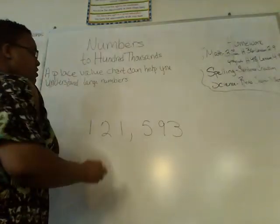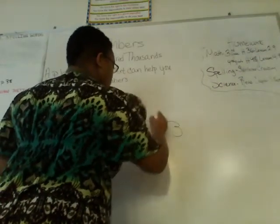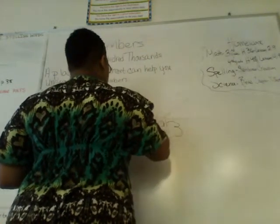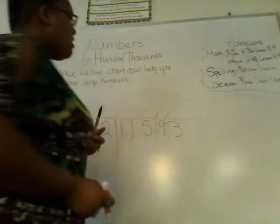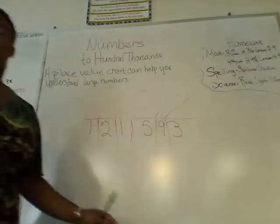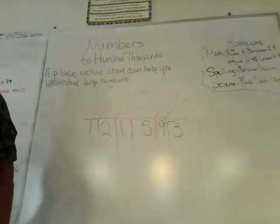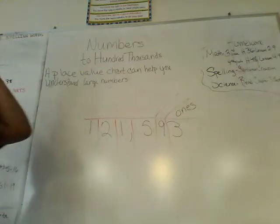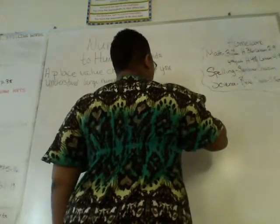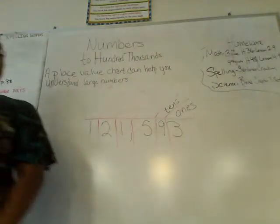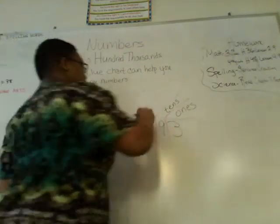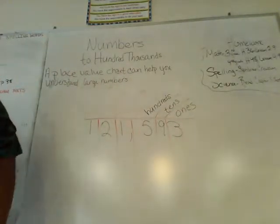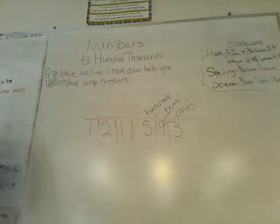To create my place value chart, I'll make a little column between each digit, and then determine the place value for each one. Timothy, what place value is three? Ones — good job. Tyler, what about the nine? Tens — good job. Amir, the five is in what place? Hundreds — good job.